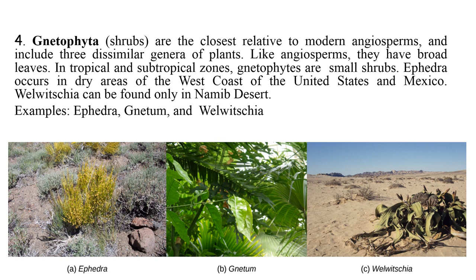Next are the gnetophytes. Gnetophytes are the closest relative to modern angiosperms and include three dissimilar genera of plants: Ephedra, Gnetum, and Welwitschia. Like angiosperms, they have broad leaves and mostly occur in dry areas of the west coast of the United States, Mexico, and Namibia.